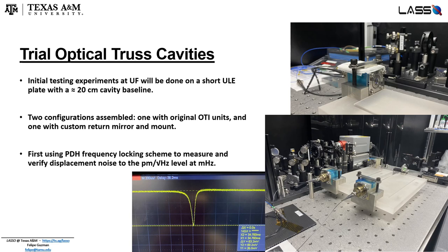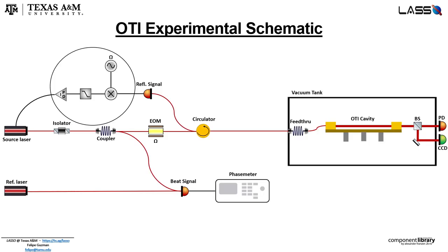Our initial experiments will use a standard Pound-Drever-Hall frequency locking scheme, where we have a source laser that comes in and is phase modulated with an EOM. The beam reflected off the cavity couples back into the fiber and is picked off with a circulator, and we measure this reflected signal with a photodiode. This is processed to create a feedback signal that goes back into our source laser, which is then mixed with a reference laser locked to an external stable reference cavity, allowing us to measure a beat signal with a phase meter or frequency counter.